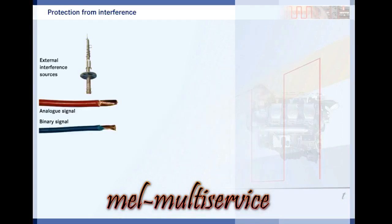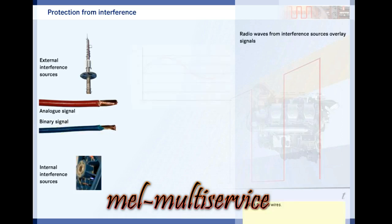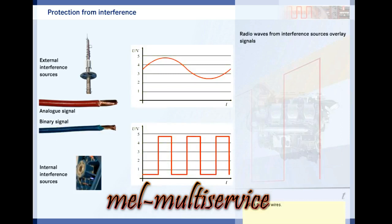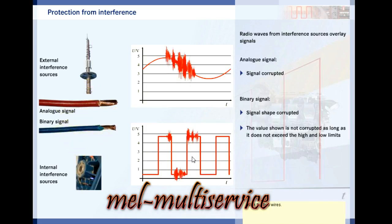Signal wires in motor vehicles are often exposed to interference from electromagnetic fields. These can be from external sources such as radio transmitters or power substations. Internal interference sources include spark plugs, electric motors, and relays. This interference is picked up by the signal wires and is superimposed on the signal. Click the signal wire with the analog and the digital signal. Interference to the analog signal corrupts the value of the signal. Interference to the digital signal corrupts the shape of the signal. As long as the signals remain within the voltage tolerances for high and low, interference does not affect the represented value.